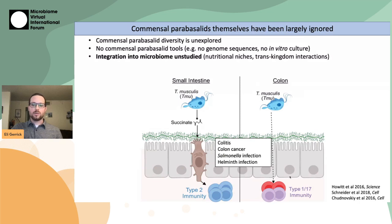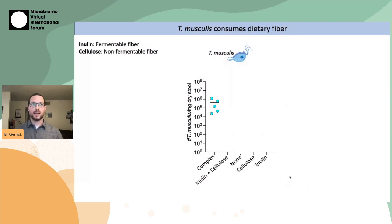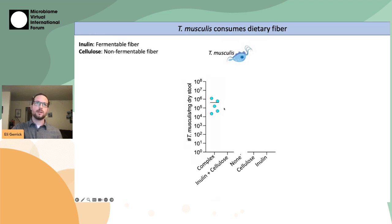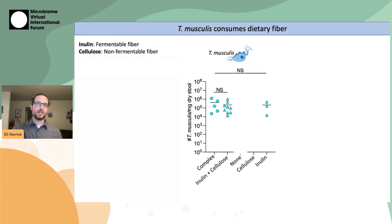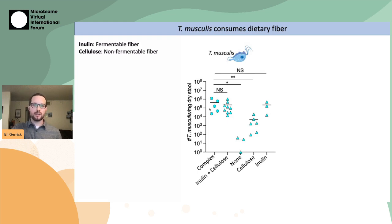These protists were not culturable in vitro, so I obtained mouse diets that had defined compositions of dietary fiber. The fibers I used were diets containing either the fermentable fiber inulin, which can act as a carbon source for the microbiota, or the non-fermentable fiber cellulose, which cannot. When I fed mice a complex chow, or a diet with inulin and cellulose, or just inulin alone, protist abundance was unaffected — the protists colonized mice just fine. But when I starved the mice of fiber completely, or gave them only cellulose, protist abundance was dramatically reduced, indicating that T. musculus does use fermentable fiber as a carbon source.